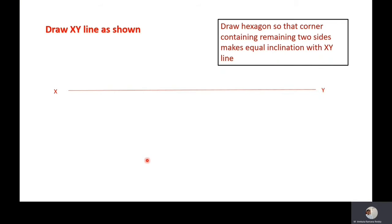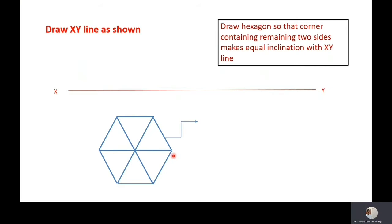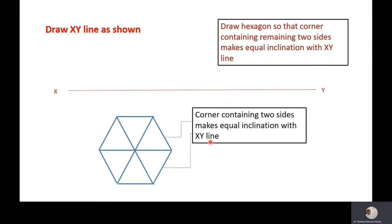Draw the corner, then the hexagon — this is the corner, this is one side, and this is another side. Complete the hexagon. This side and this side make equal inclination with the XY line. The corner containing the remaining two sides makes equal inclination with the XY line.